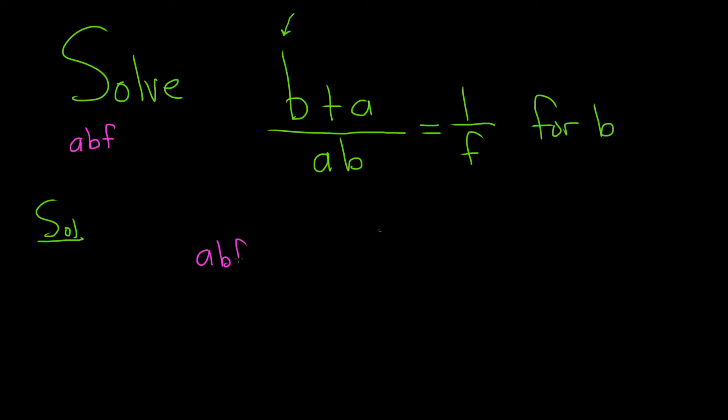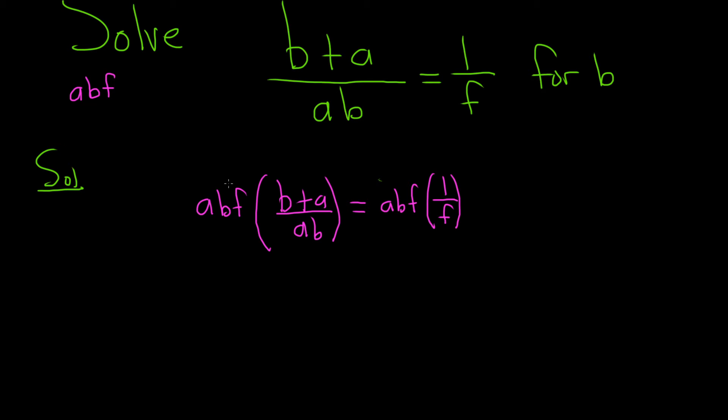So abf on the left hand side. And so here we have b plus a over ab. And then we have abf on the right hand side. And here we have 1 over f. Okay. So on the left hand side looks like the a and the b cancel.